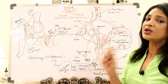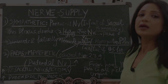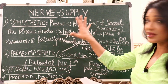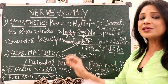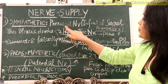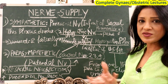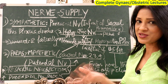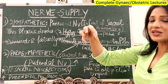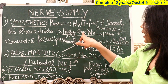Now we come to the nerve supply of the external and internal genitalia of females. This is again a very busy slide. The nerve supply includes parasympathetic and sympathetic components. Sympathetic fibers are the pre-sacral nerves, which arise from the sacral promontory, forming a plexus that divides into two hypogastric nerves.